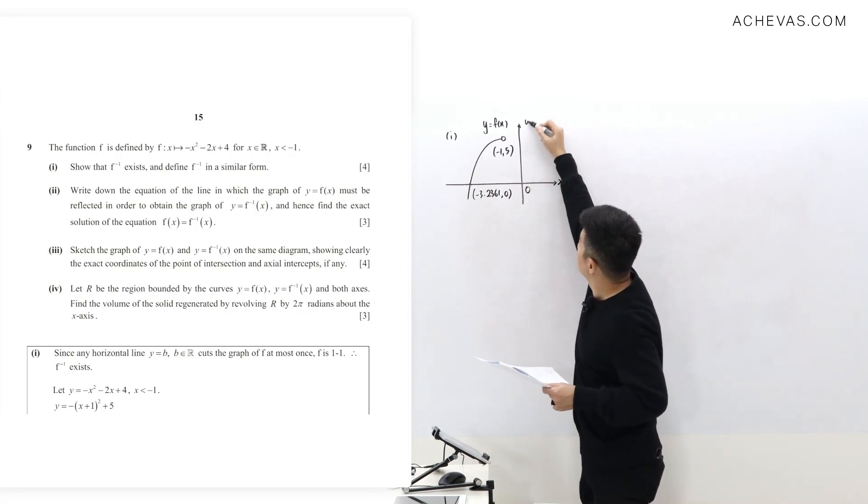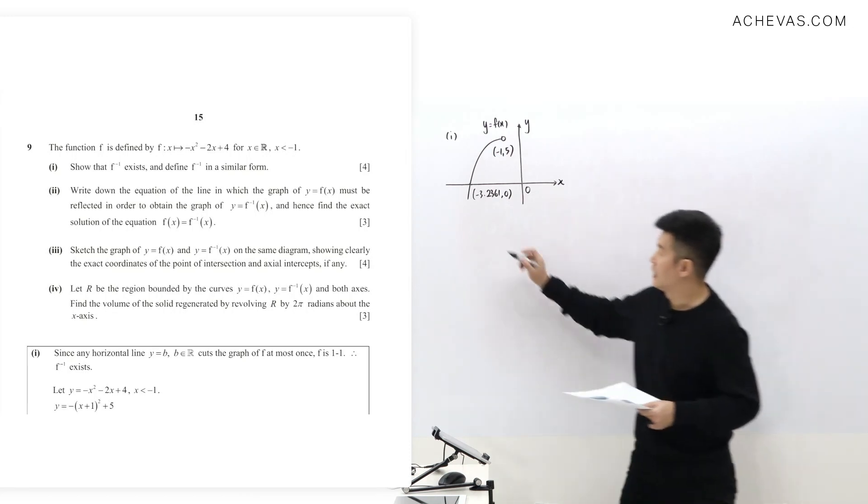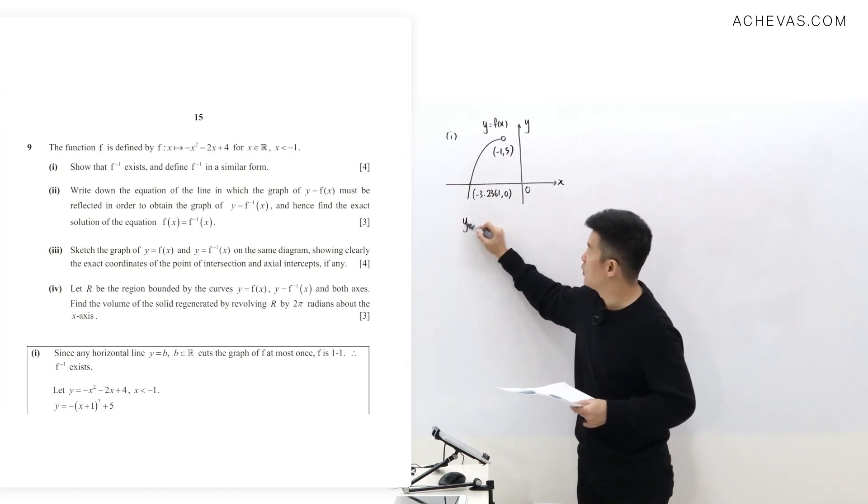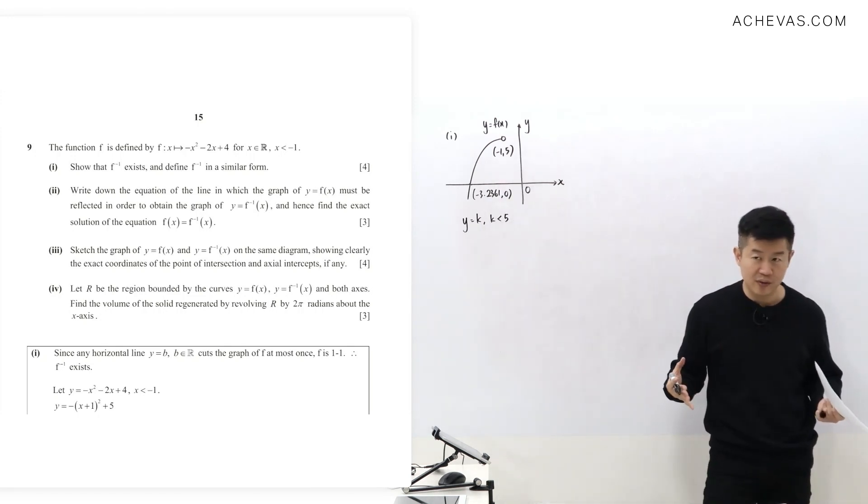Based on this, I can say that a horizontal line y equals k, where k is a number less than 5, is going to cut the graph at only one point.